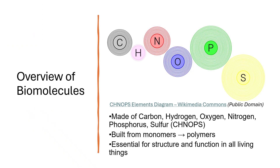All living things are built from a small set of elements: carbon, hydrogen, oxygen, nitrogen, phosphorus, and sulfur. These elements form monomers which link together into polymers. Each type of biomolecule has a unique role in structure and function.